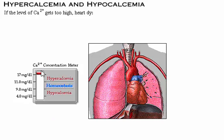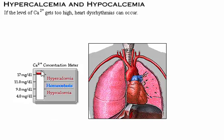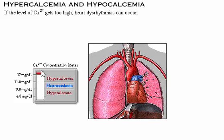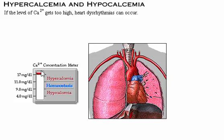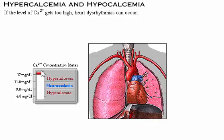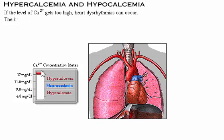If the level of calcium gets too high, heart dysrhythmias can occur. Other symptoms of hypercalcemia include fatigue, confusion, nausea, coma, cardiac arrest, and calcification of the soft tissues. The heart can stop if the calcium level gets too high.